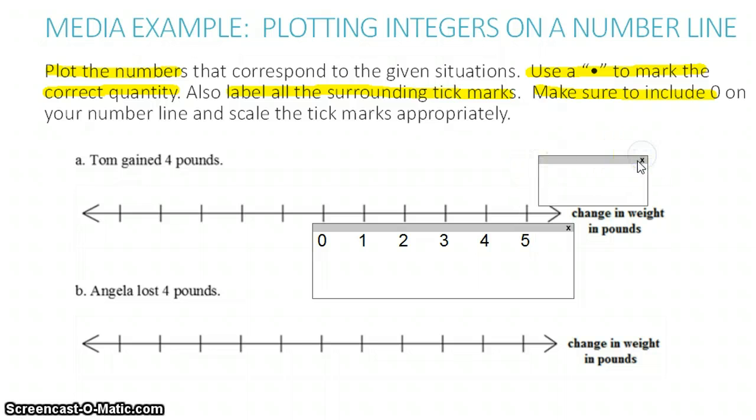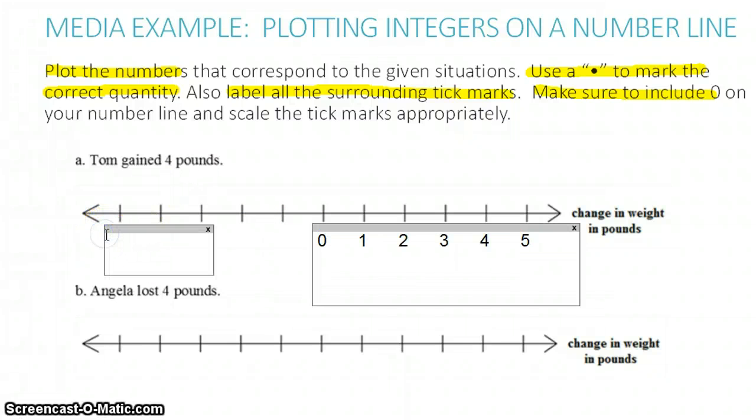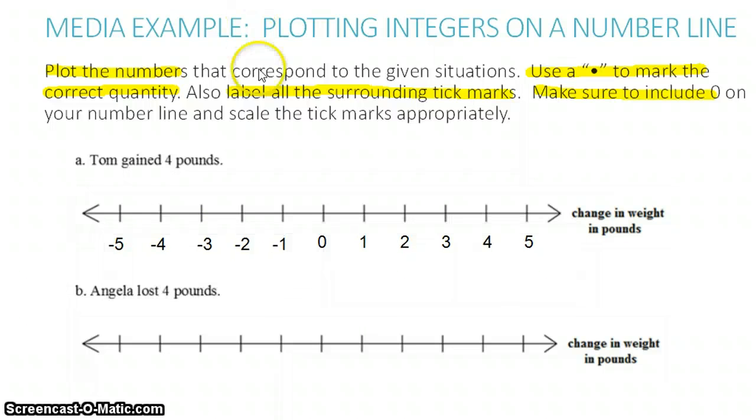So I've labeled all the positive values. And it said to label all of them, so I'm going to label the negative values. I'm going to start this over here. Remember this would be negative one, negative two, negative three, negative four, negative five. So I'm going to start at negative five, negative four, negative three, negative two. Notice I'm trying to line them up underneath the tick mark so we know which number it represents. And negative one.